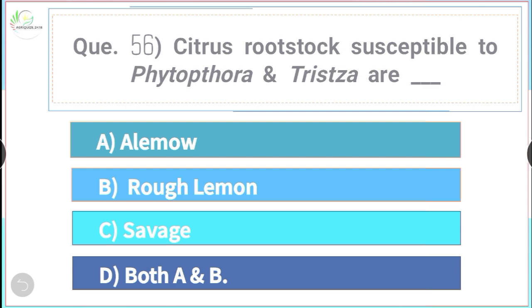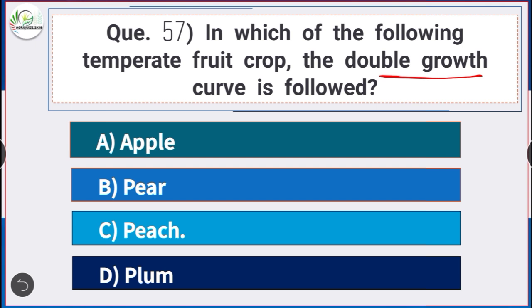Question number 57: In which of the following temperate fruit crops is the double sigmoid growth curve followed? Answer is option C — peach. Double sigmoid growth curve is followed in peach.